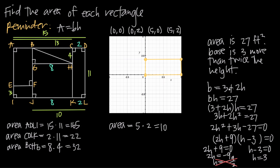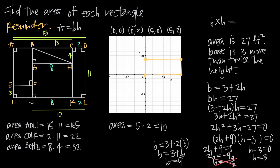Plugging h equals 3 back into b equals 3 plus 2h gives b equals 3 plus 2 times 3, so b equals 9. The dimensions of the rectangle are 9 feet by 3 feet, which confirms the area of 27 square feet. Those are just a couple of examples of different ways you might be asked to find the area of a rectangle.